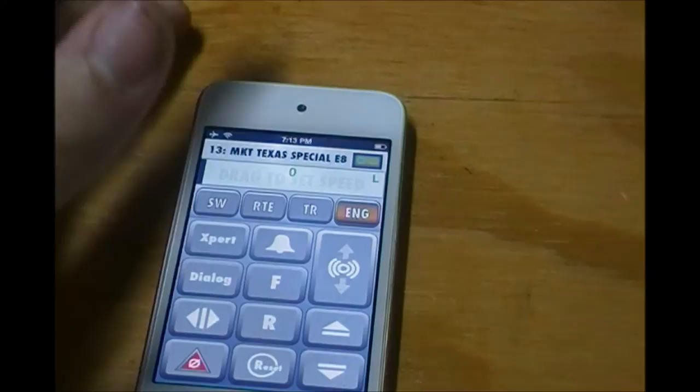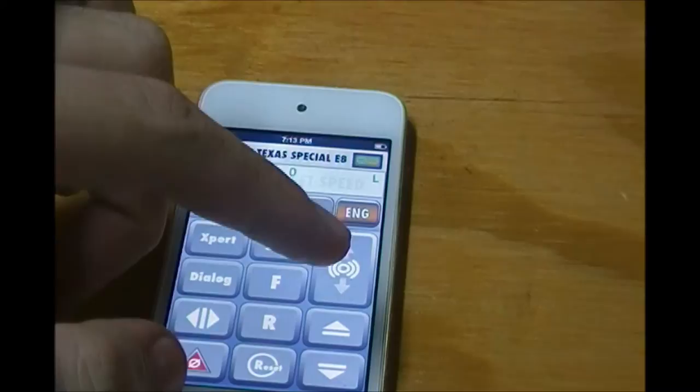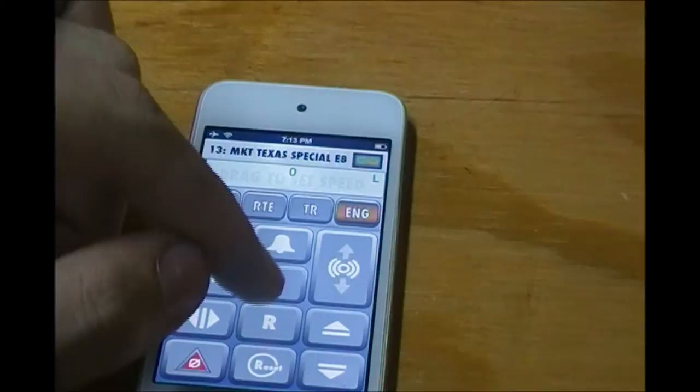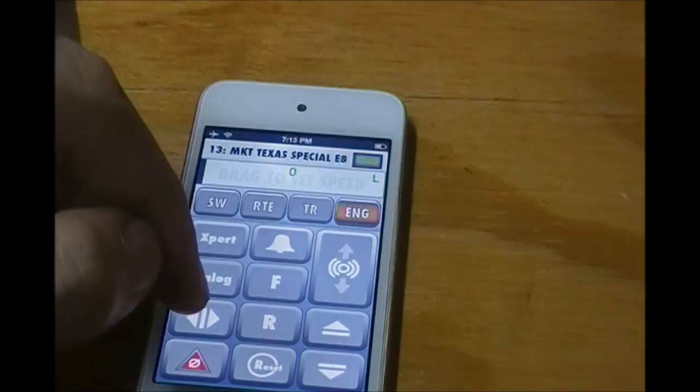Now the TR that's for your trains like your lash ups and stuff. Some of the buttons we have, we got the horn. Now this is a quillable horn and I'll demonstrate this in just a minute. It's a really cool quillable horn. We got the bell, the couplers, brake and boost, reset, halt, and direction control.